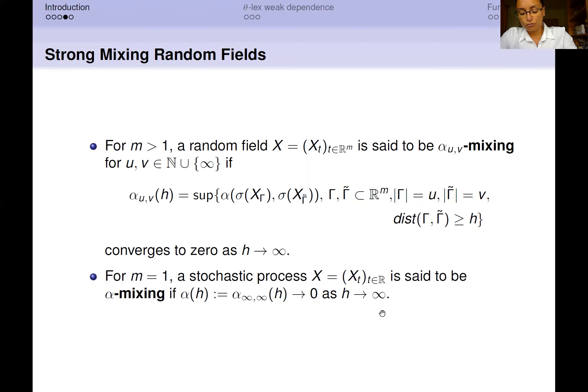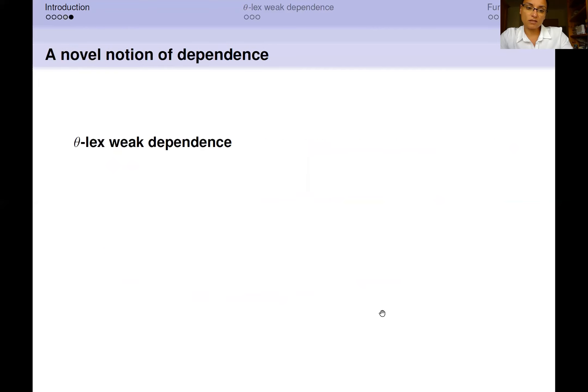What we wanted to do in this paper is developing a more general theory that allowed us to analyze central limit theorems for spatial and spatiotemporal random fields, like mixing moving average and ambit fields. So what we do in the paper is defining another notion of dependence. We call it θ-lex weak dependence.